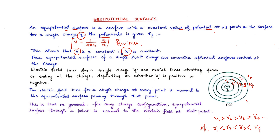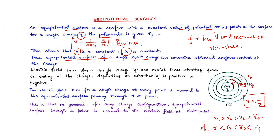From here we understand that V is proportional to 1 by R. Thus equipotential surfaces of a single point charge are concentric spherical surfaces centered at the charge. Electric field lines for a single charge are radial lines starting from or ending at the charge, depending on whether Q is positive or negative. Similarly, for potential we have concentric circles, while for the electric field we define radial lines.